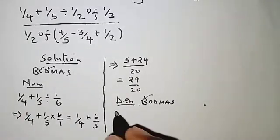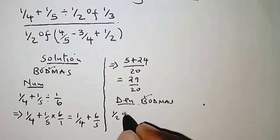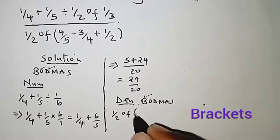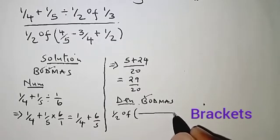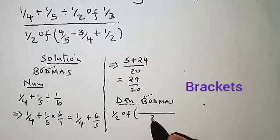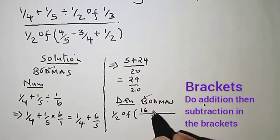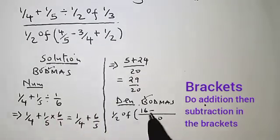The first line is one half of, and then in the brackets we sort this out. The LCM is 20: 5 into 20, that is 4 by 4, 16 minus 4 into 20, 5 by 3, 15.